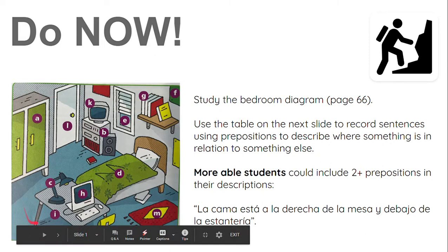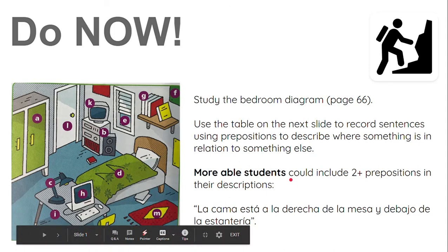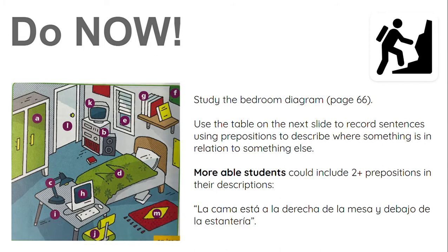So we have this diagram here of a bedroom. We saw this last week when we were looking at all the different things that we can have in our bedroom. What I want you to do is use the table on the next slide to record sentences using prepositions to describe where something is in relation to something else. Remember last week we said a preposition is a word that tells us where something is. More confident students, you can have a go at making really long sentences using two or more prepositions.